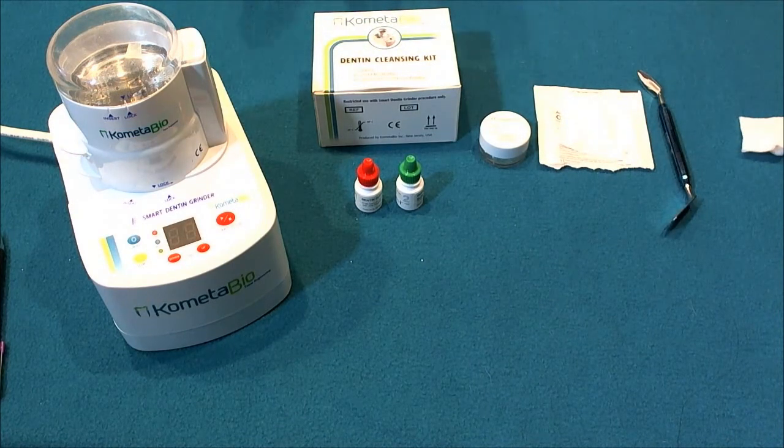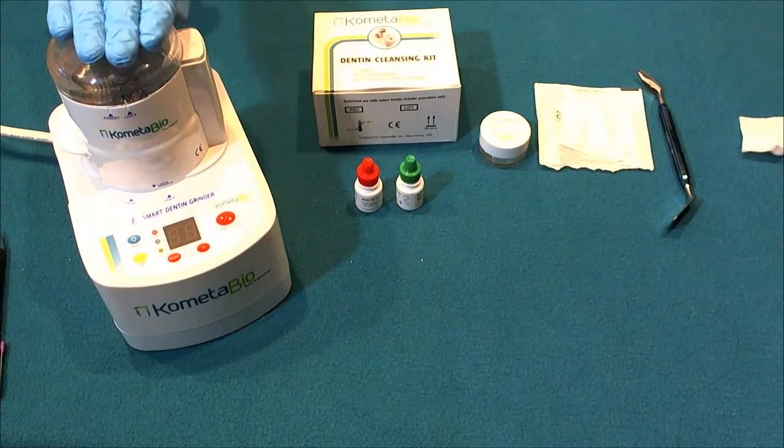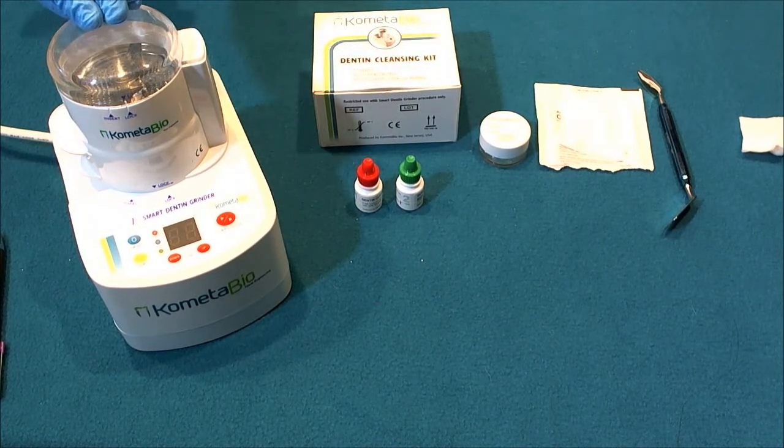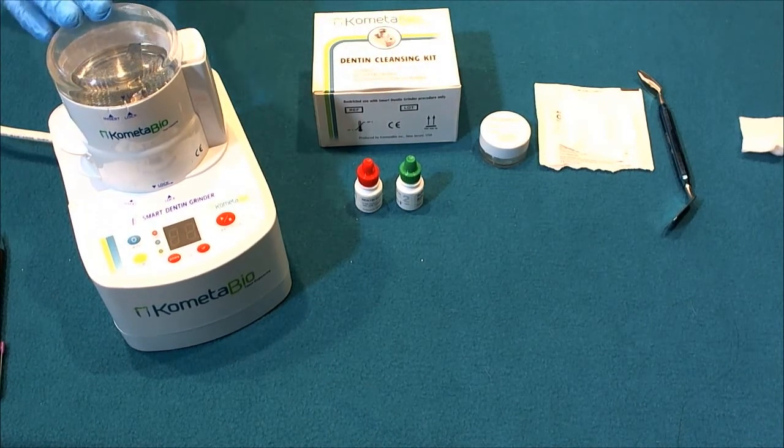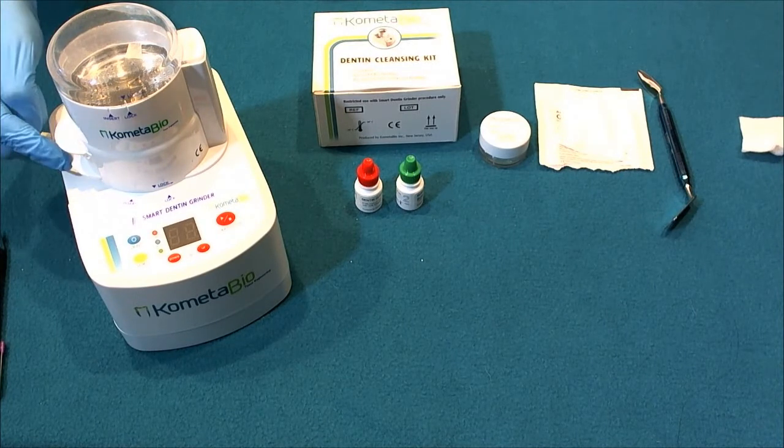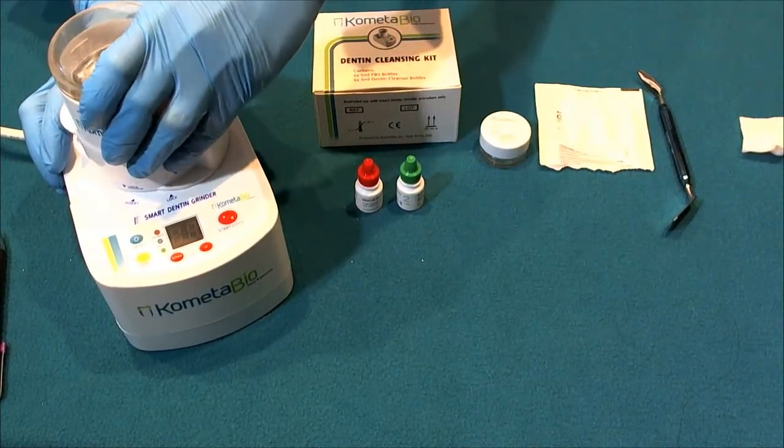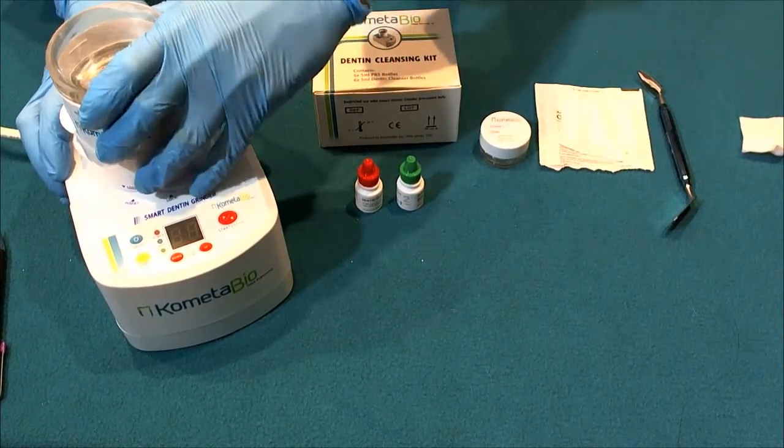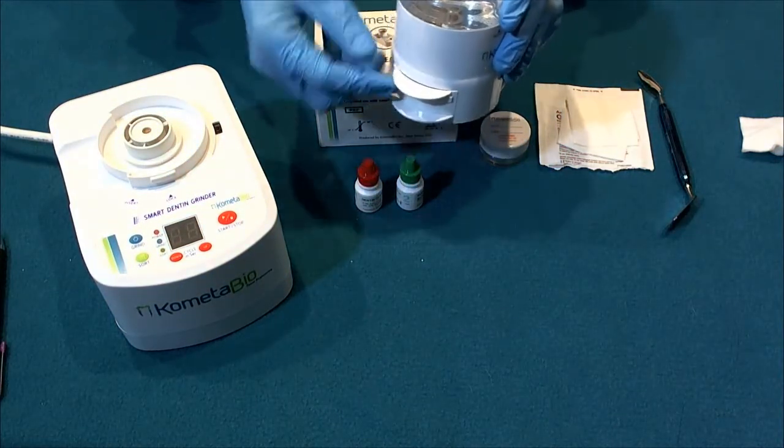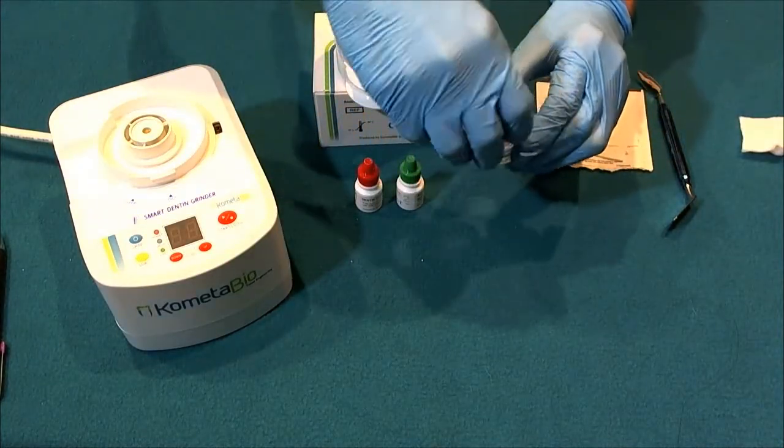So for the purpose of this video we assume the tooth has already been processed using the CometaBio smart dentin grinder and at this point the tooth particulate or the graft is residing in these two compartments. So let me show you what we've got here. In the top tray we are, let me just open the mixing dish first so we can pour it straight in.